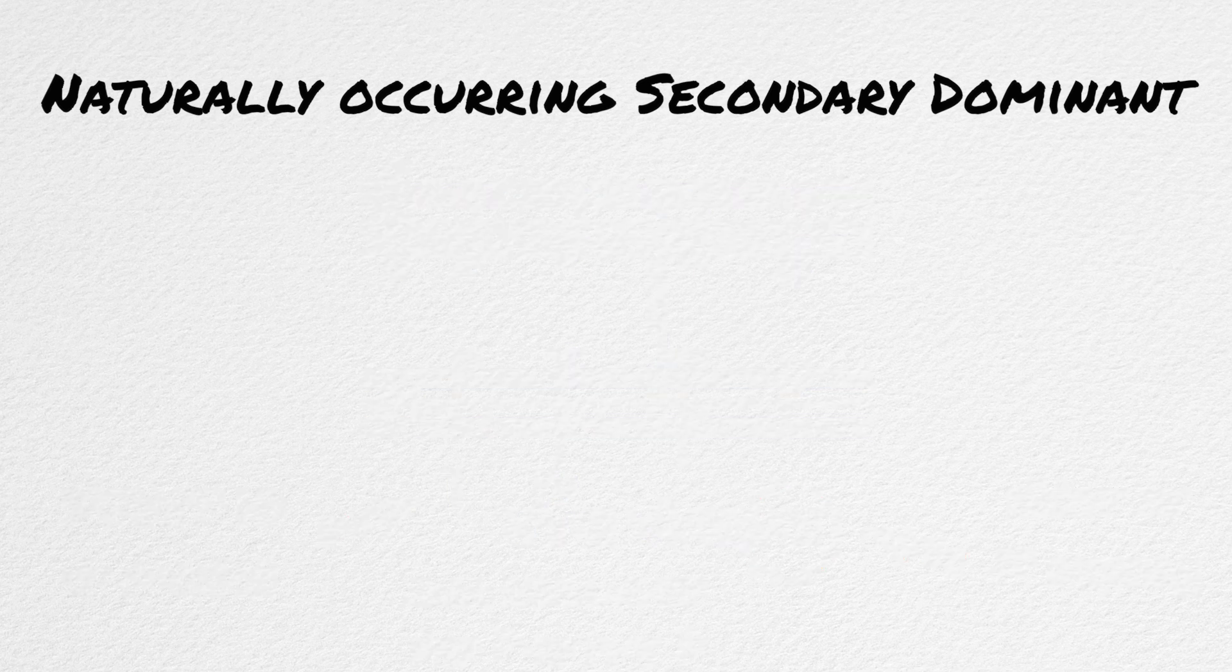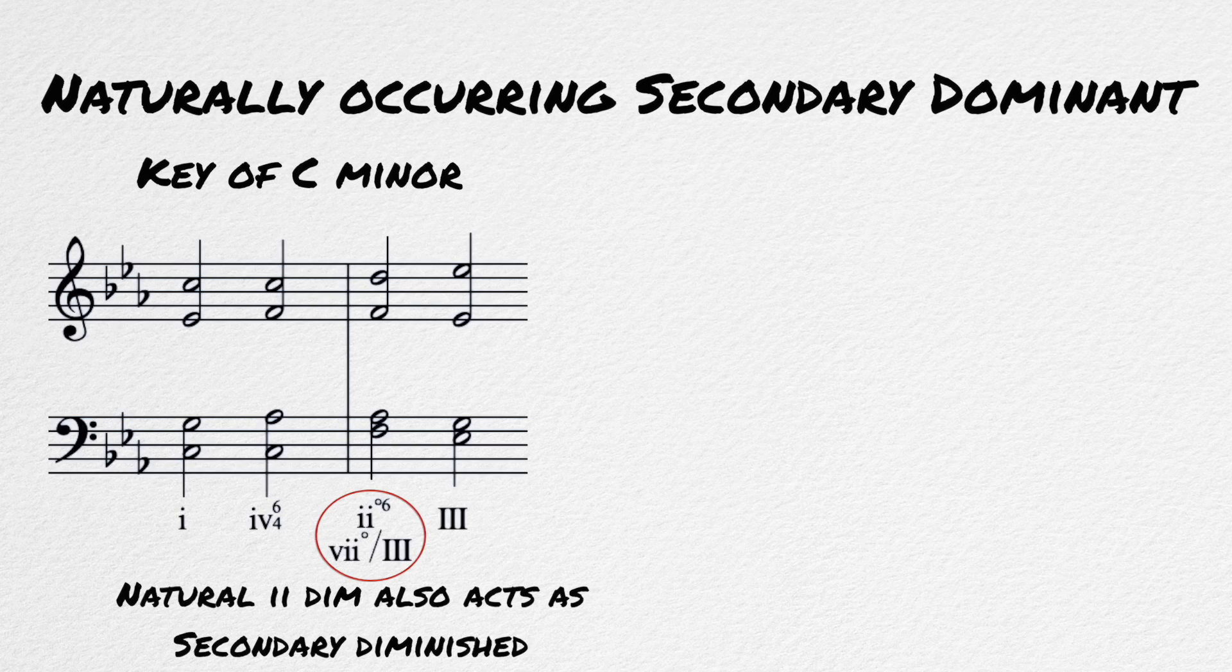Sometimes secondary dominants also occur in a key that point towards a chord in that same key. The II diminished chord in minor will act as a secondary diminished chord for the naturally occurring major III chord in minor. In C minor, D diminished will be nicely resolved to E flat major.